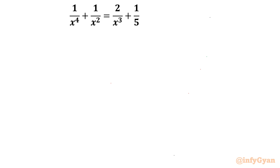Welcome back to Infigyan my dear friends. In this very exciting video of algebraic challenging equations, in this series we are going to solve one very interesting rational equation. The equation is: 1 over x⁴ plus 1 over x² equals 2 over x³ plus 1 over 5.